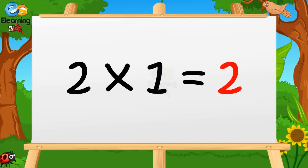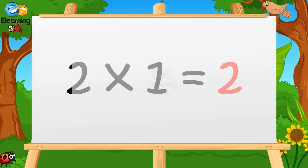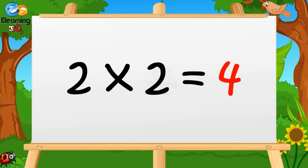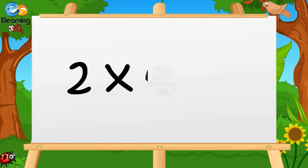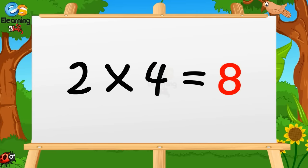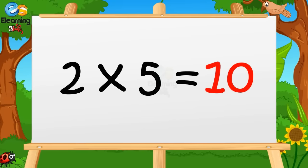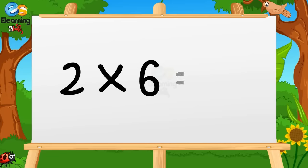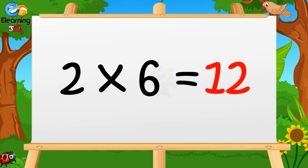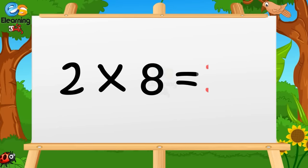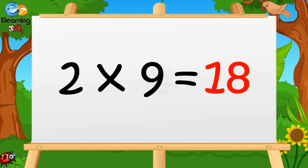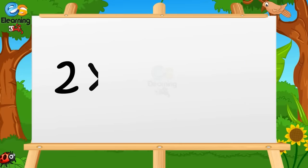Table of 2: 2 ones are 2. 2 twos are 4. 2 threes are 6. 2 fours are 8. 2 fives are 10. 2 sixes are 12. 2 sevens are 14. 2 eights are 16. 2 nines are 18. 2 tens are 20.